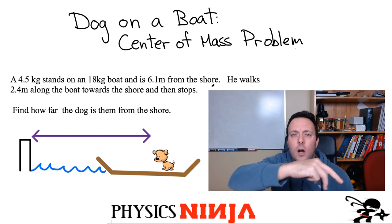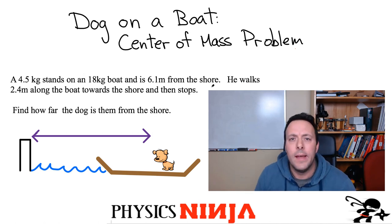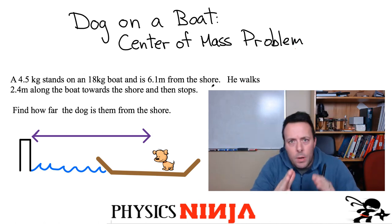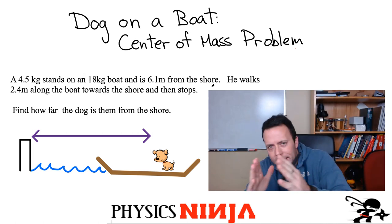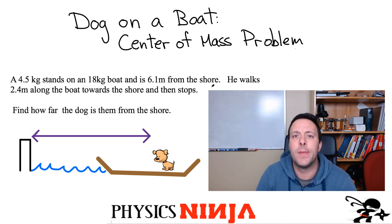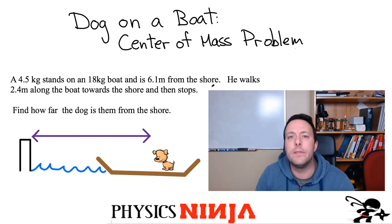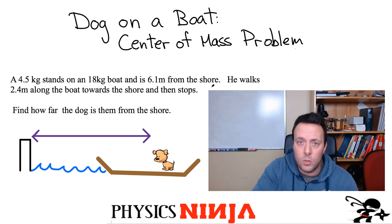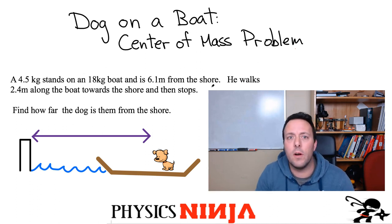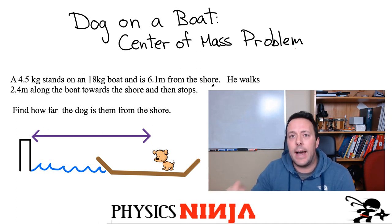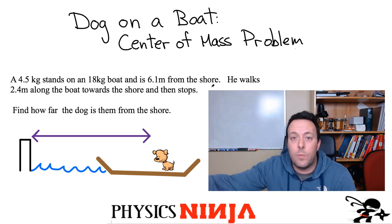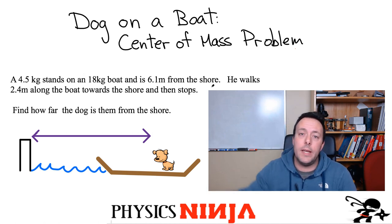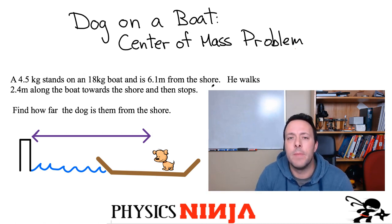The dog is going to start walking on the boat. As the dog walks in one direction, the boat is going to slightly shift to the other direction. If the dog walks 2.4 meters along the boat and moves closer to the shore, let's find how far the dog is from the shore. He was originally 6.1 meters away — how close is he at the end?